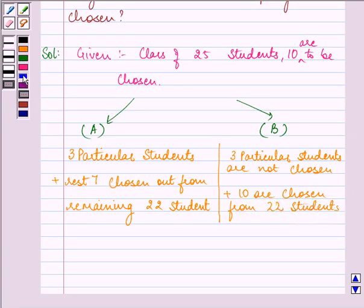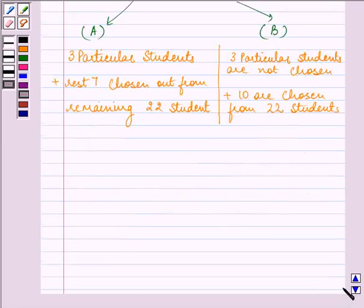Now number of ways A can be chosen is, since 3 particular students are chosen, there is only one combination possible here. The order of choosing the student does not matter. Whereas, in this, 7 students can be taken out of 22, so the combination will be 22C7.